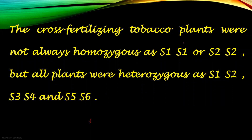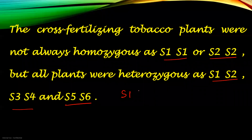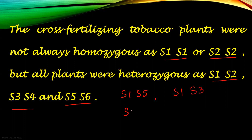The cross-fertilizing tobacco plants were not always homozygous as S1 S1 or S2 S2, but all plants were heterozygous — for example S1 S2, S3 S4, S5 S6, or combinations like S1 S5, S1 S3, S5 S2, S3 S6, and so on. They are all heterozygous.